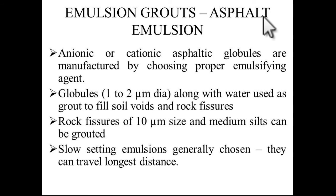Emulsion grout or asphalt emulsion: anionic or cationic asphalt globules are manufactured by choosing the proper emulsifying agent. Globules of 1 to 2 micrometer diameter along with water are used as grout to fill soil voids and rock fissures. Rock fissures of 10 micrometer size and medium silts can be grouted. Slow-setting emulsions are generally chosen as they travel the longest distance.